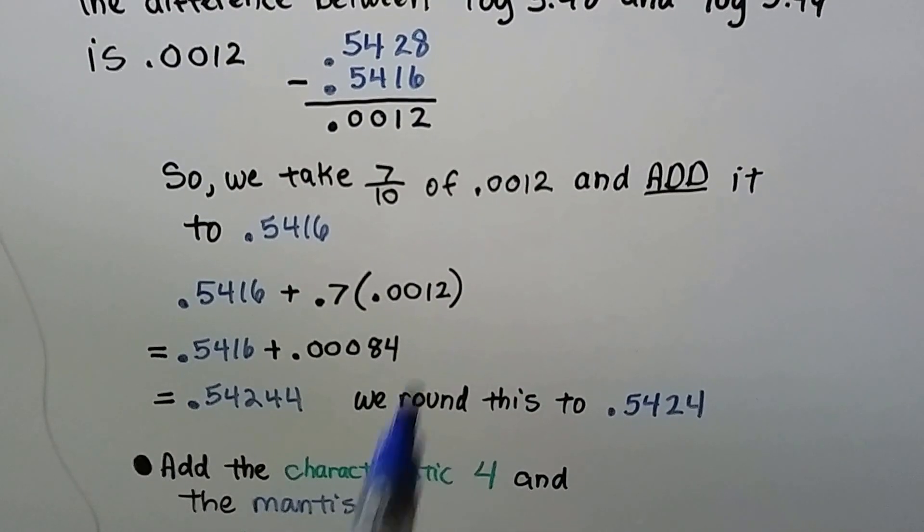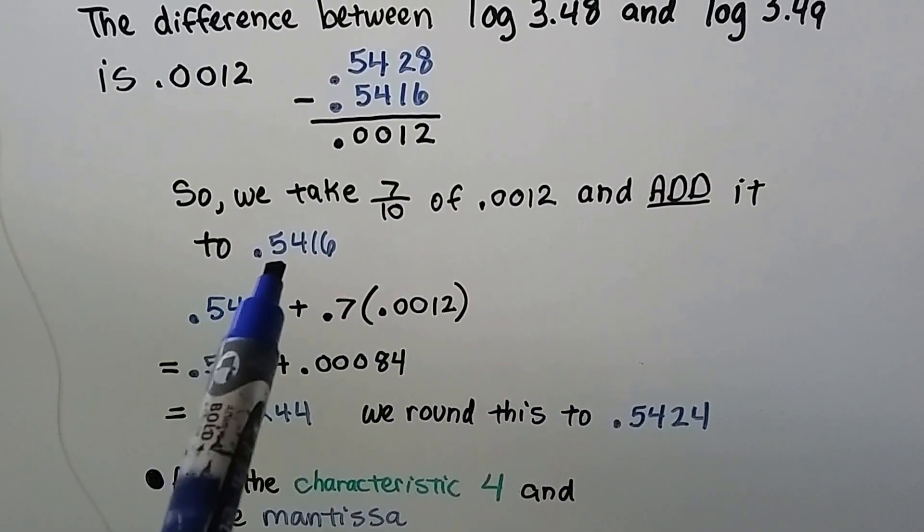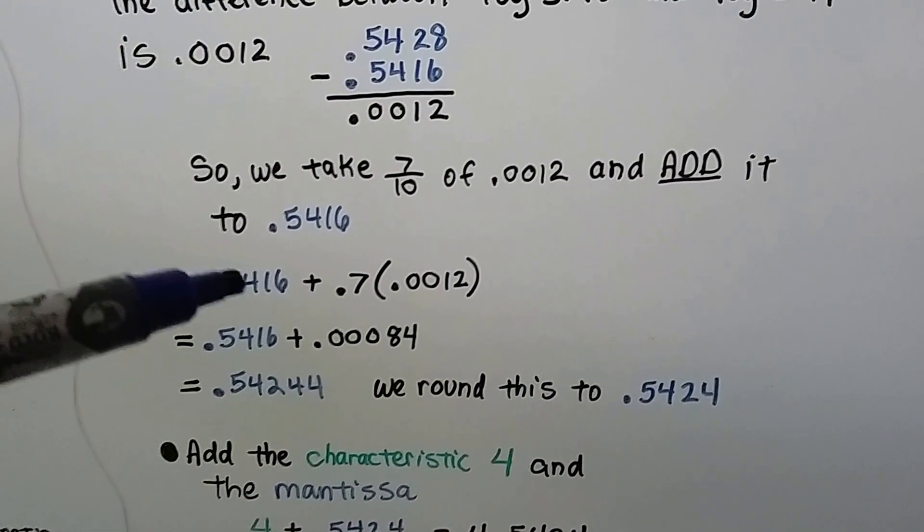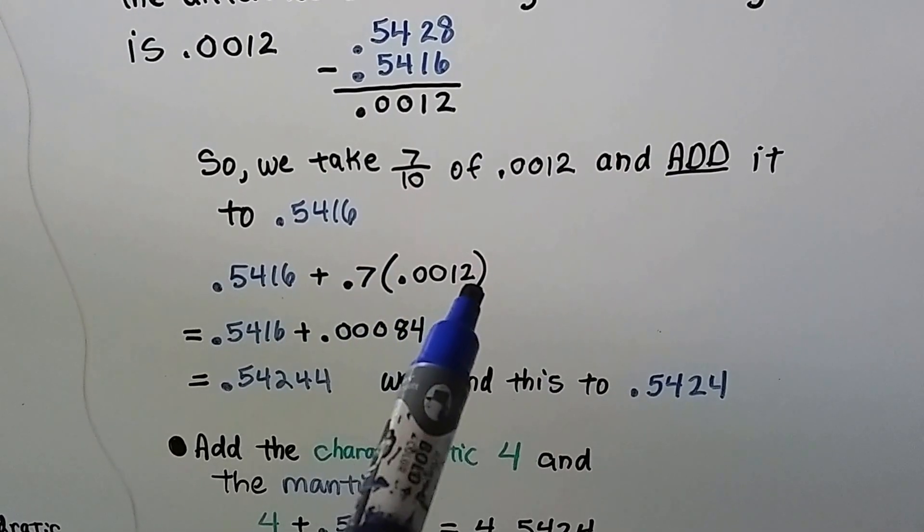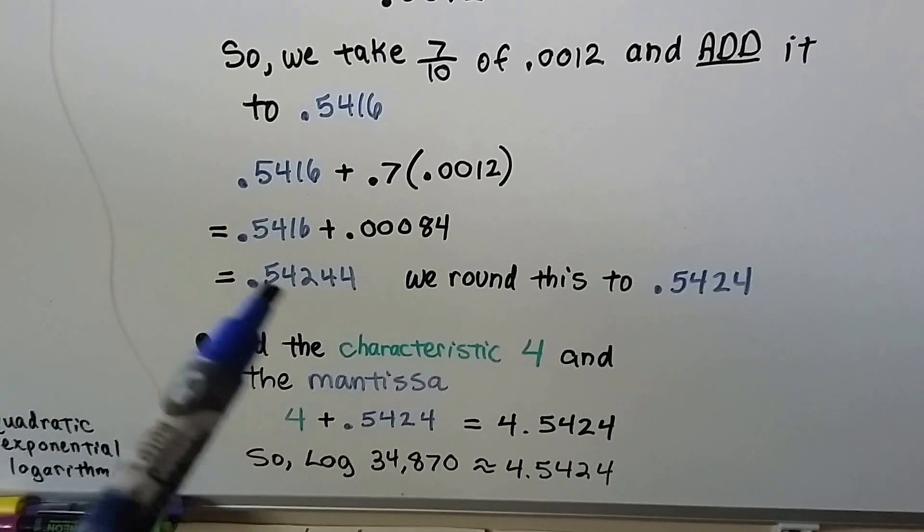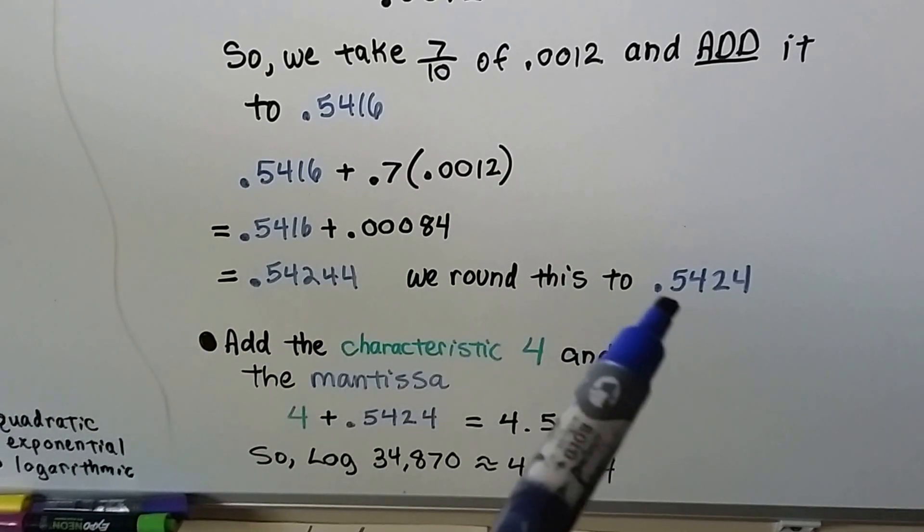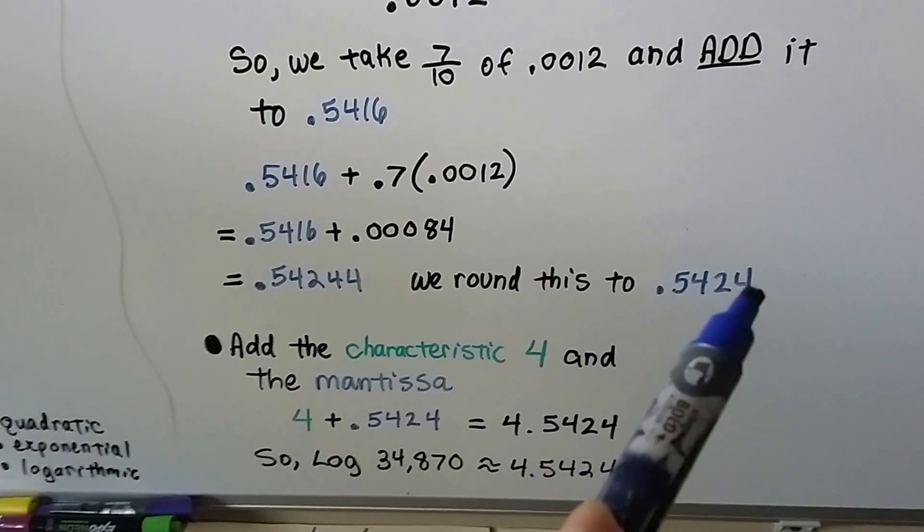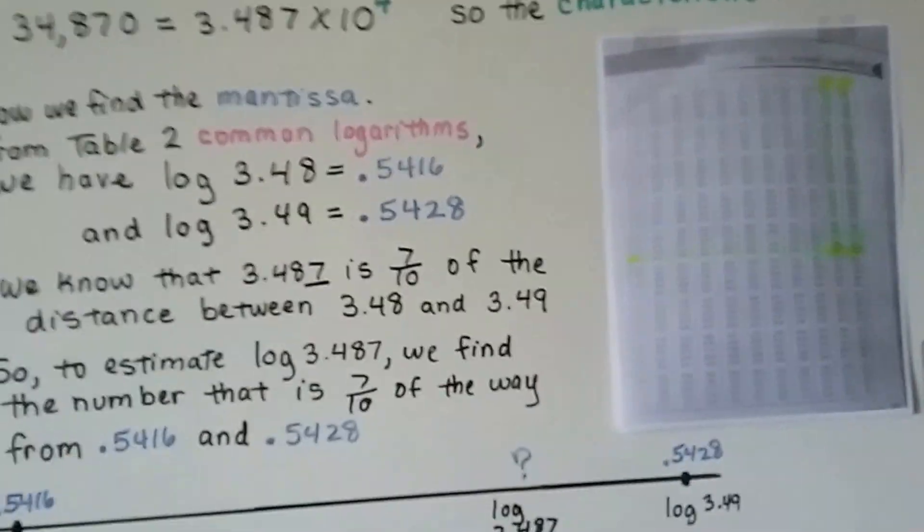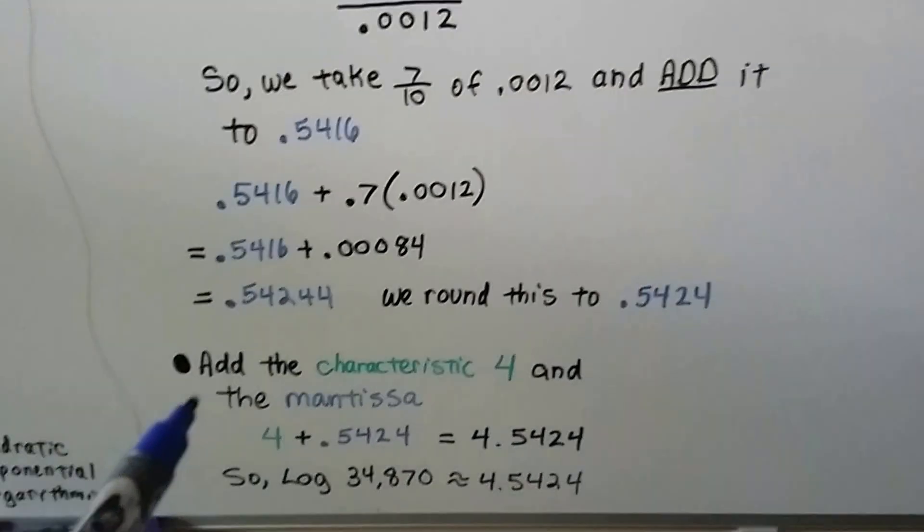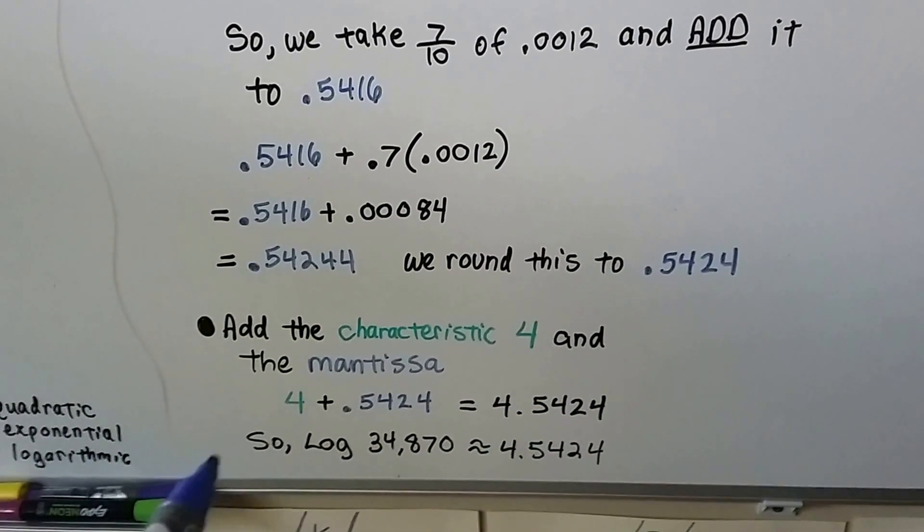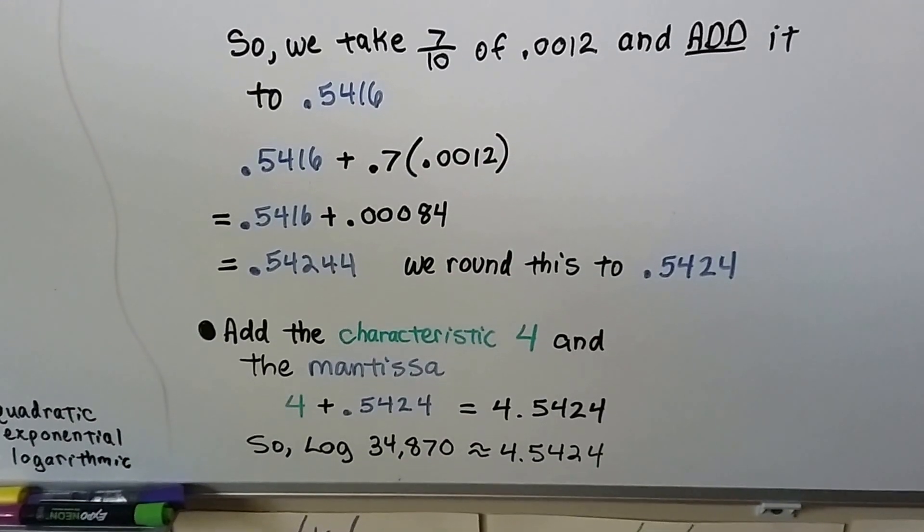We take 7 tenths of 0.0012 and add it to 0.5416. So here's our 0.5416 plus that 7 tenths times 0.0012. We get 0.5416 plus 0.00084. We get this that can be rounded to 0.5424. We add the characteristic 4 that we knew we had. 4 added to the mantissa of 0.5424 is 4.5424. So we know that log 34,870 is approximately 4.5424.